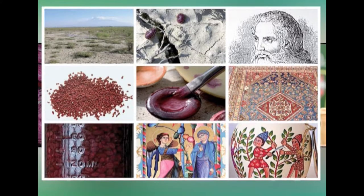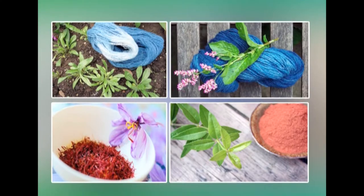Archaeologists have found evidence of textile dyeing dating back to the Neolithic period. In China, dyeing with plants, barks, and insects has been traced back more than 5,000 years. Throughout history, people dyed their textiles using common locally available materials, but scarce dye stuffs producing brilliant and permanent colors — such as Tyrian purple and crimson kermes — became highly priced luxury items in the ancient and medieval world. Plant-based dyes such as woad, indigo, saffron, and madder were raised commercially and were important trade goods in the economies of Asia and Europe.